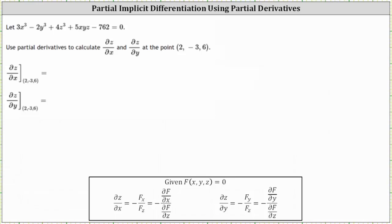We are given an implicit equation set equal to zero with variables x, y, and z. We're asked to use partial derivatives to calculate the partial derivative of z with respect to x and the partial derivative of z with respect to y at the point two comma negative three comma six.